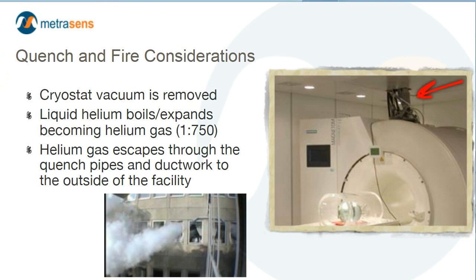Let's now move on to the subject of a magnet quench. Helium is not stable as a liquid. In order to maintain its liquid state, helium must be at a temperature of at least 4 Kelvin, which is approximately minus 452.47 degrees Fahrenheit. In order to maintain that low a temperature, the vessel or cryostat within the magnet that contains the magnet coils and the liquid helium must be vacuum sealed. If the vacuum were to be removed, the temperature within the cryostat is going to rise. Helium will boil at 4.2 Kelvin — approximately minus 452.11 degrees Fahrenheit — and it's going to expand at a ratio of approximately 1 to 750. This means for one liter of liquid helium, it would expand to approximately 750 liters of helium gas.